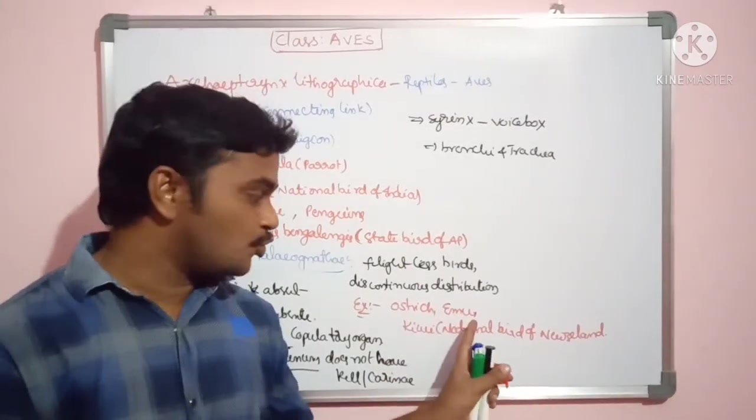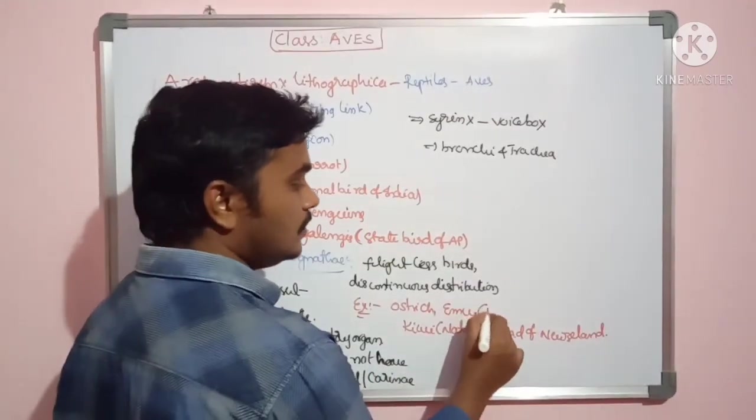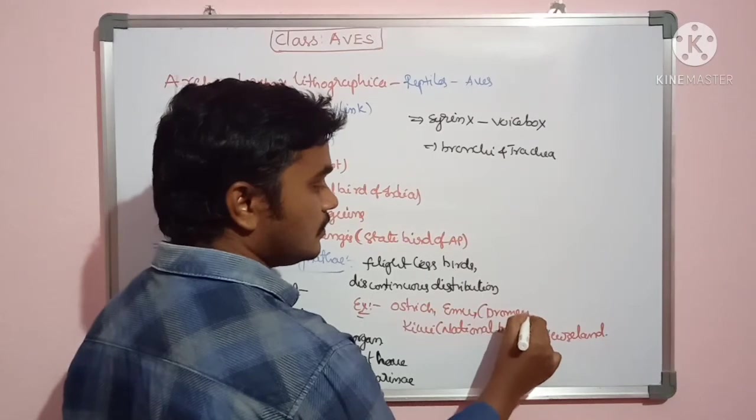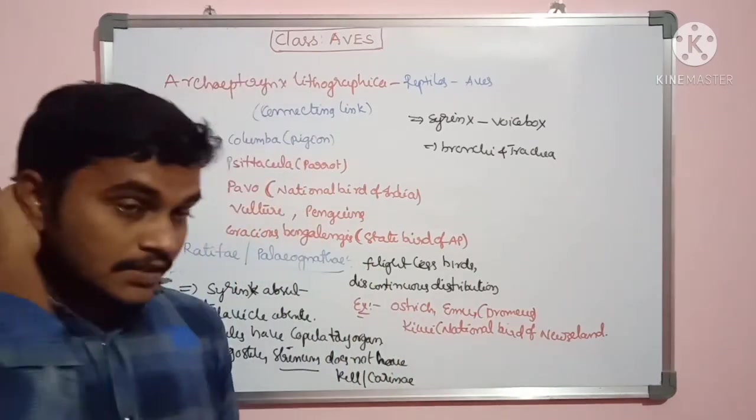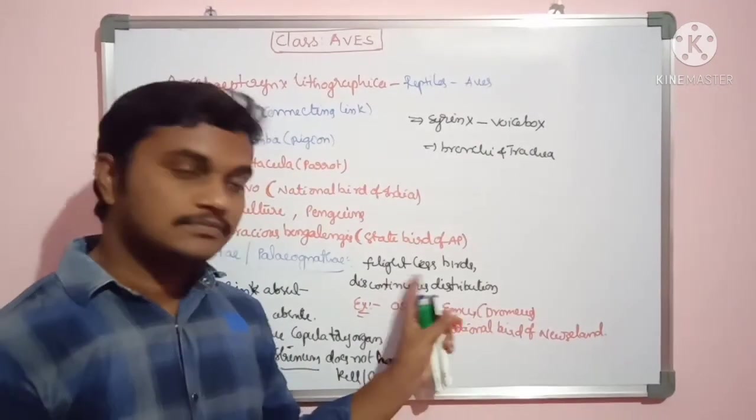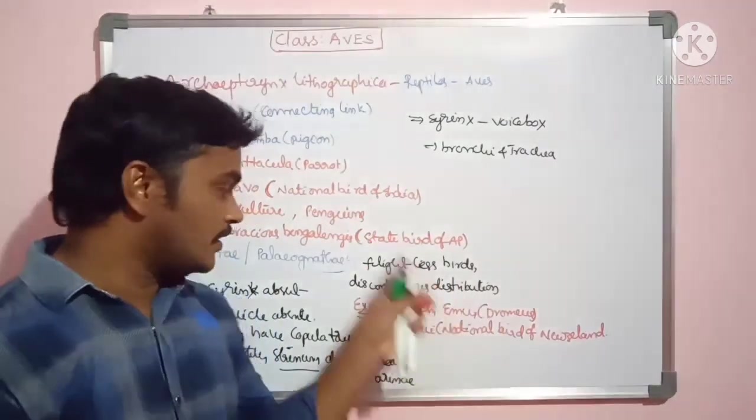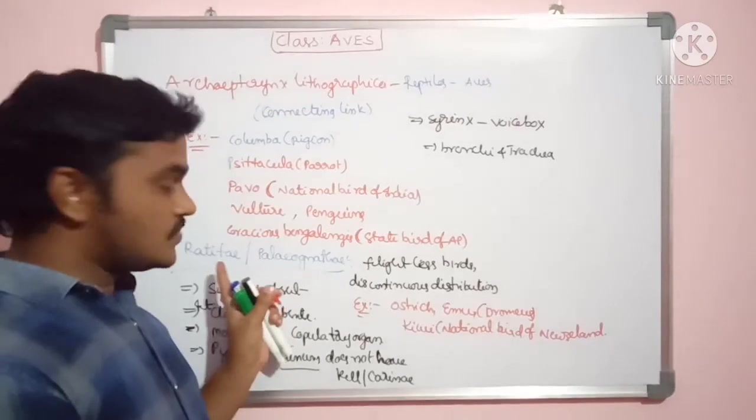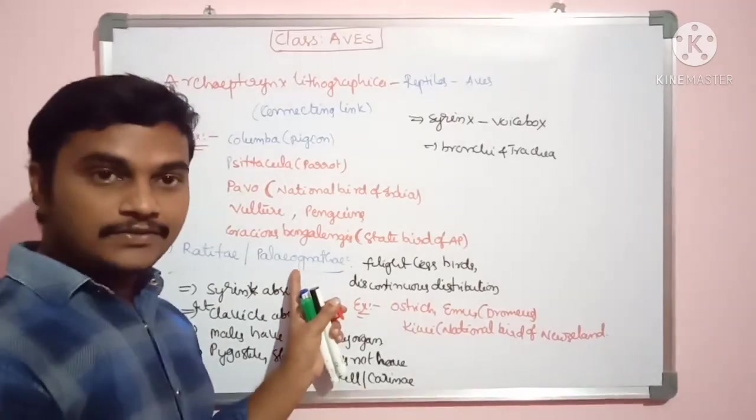These are some flightless birds. They contain this type of characters. They show discontinuous distribution. They come under Ratitae, also called as Paleognathae.